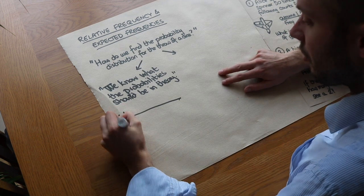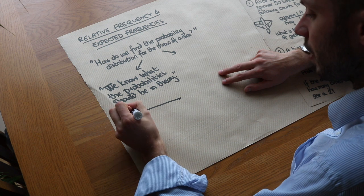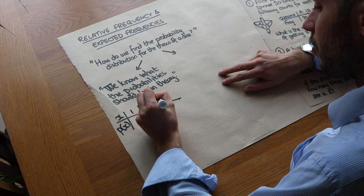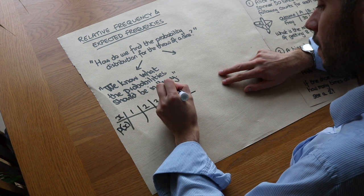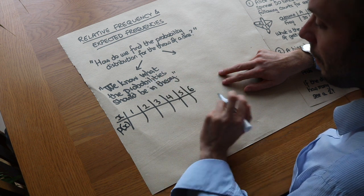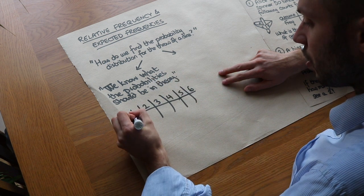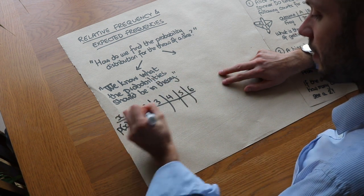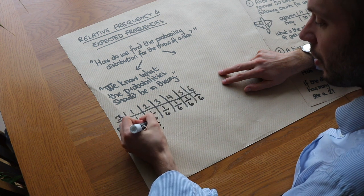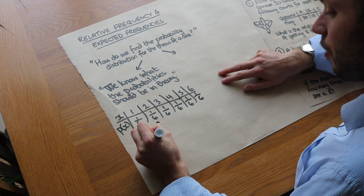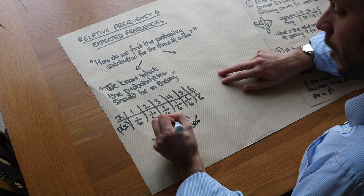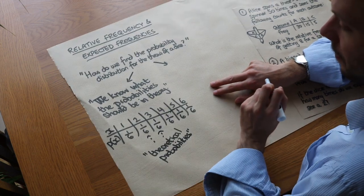We've got the different outcomes — 1, 2, 3, 4, 5, 6 — and the probability of each. In theory, if it's a fair dice, then it should be one sixth for each. These would be known as theoretical probabilities, because it's what we expect in theory.